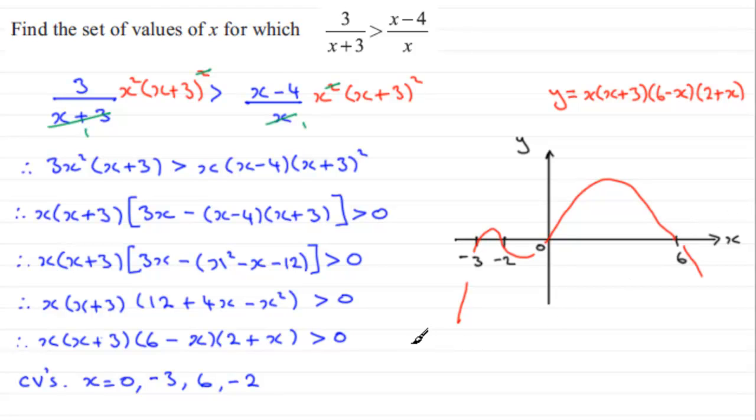So just to recap, we can see that therefore from the graph, our solution set for y being greater than 0 is going to be when x lies between minus 3 and minus 2, or when x lies between 0 and 6.